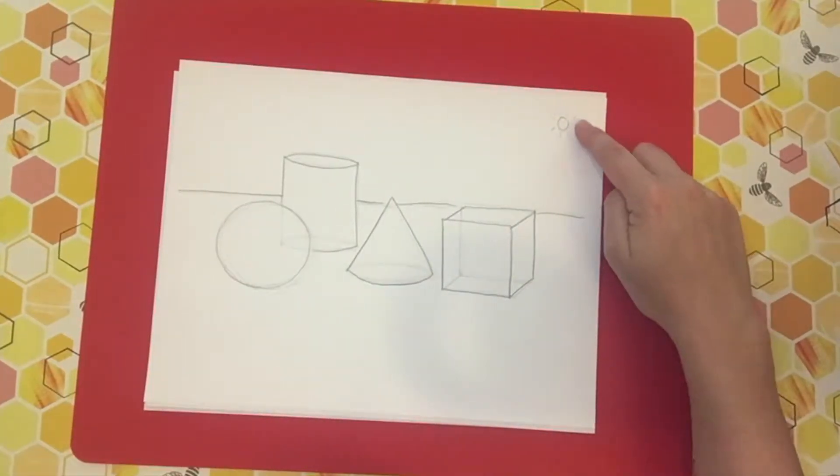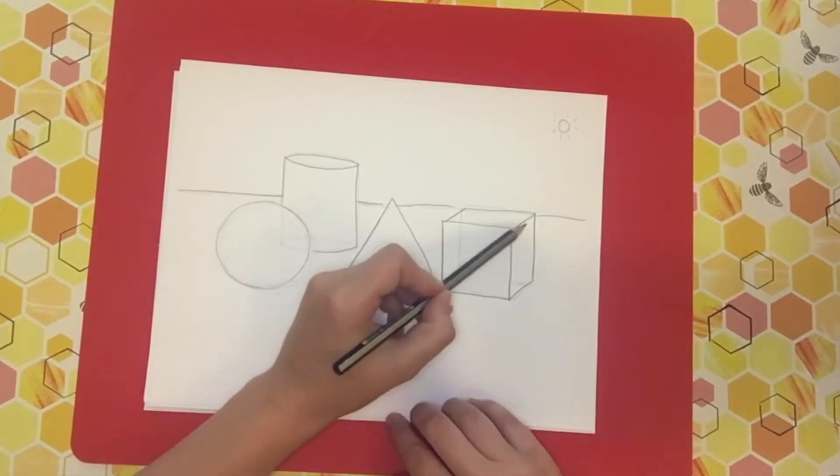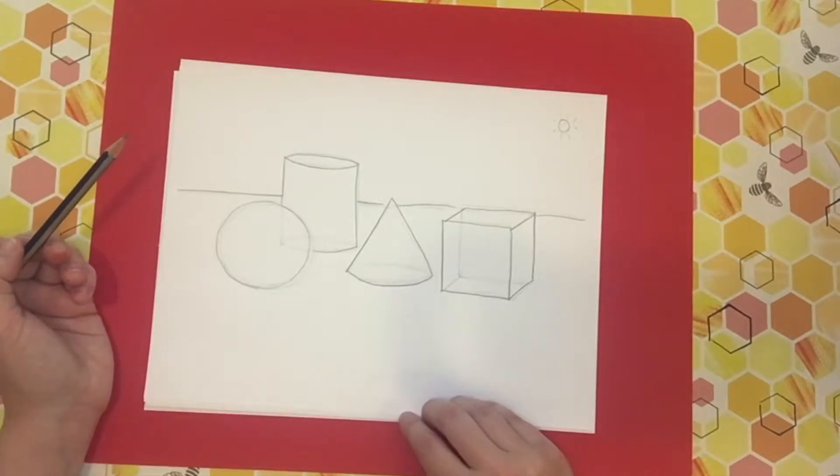Because our light source is here, the sides of each of these objects here, here, here, and here will be the lightest, and the ones furthest away will be the darkest.